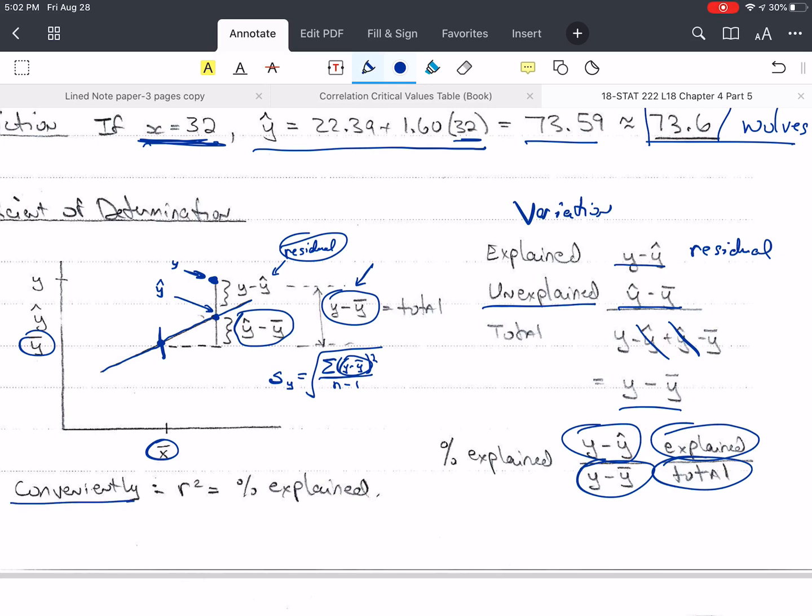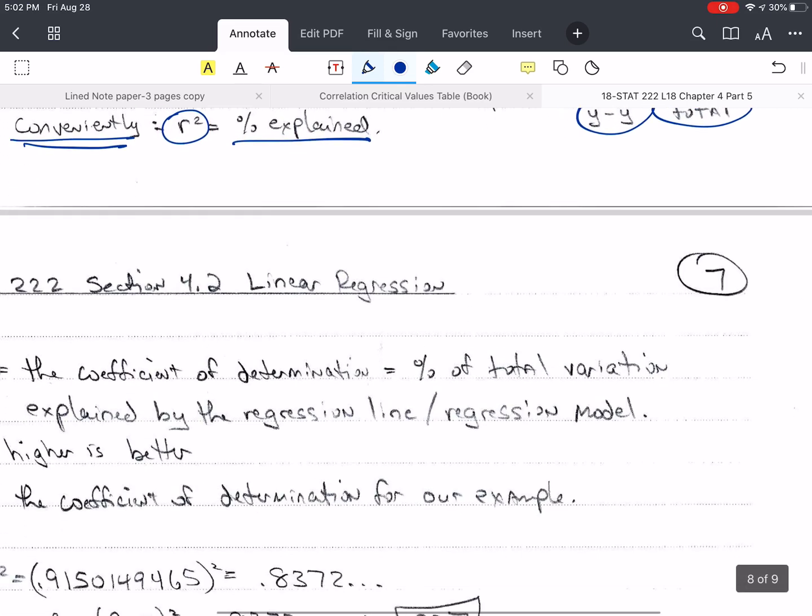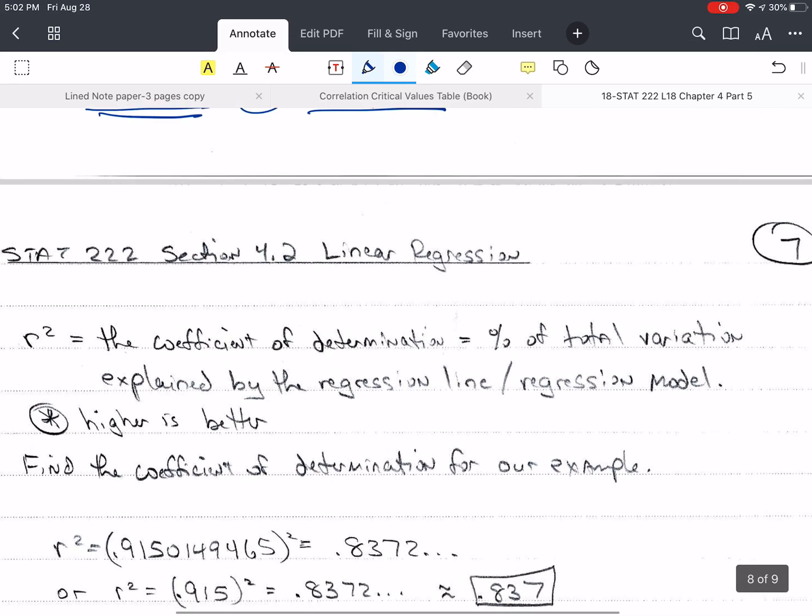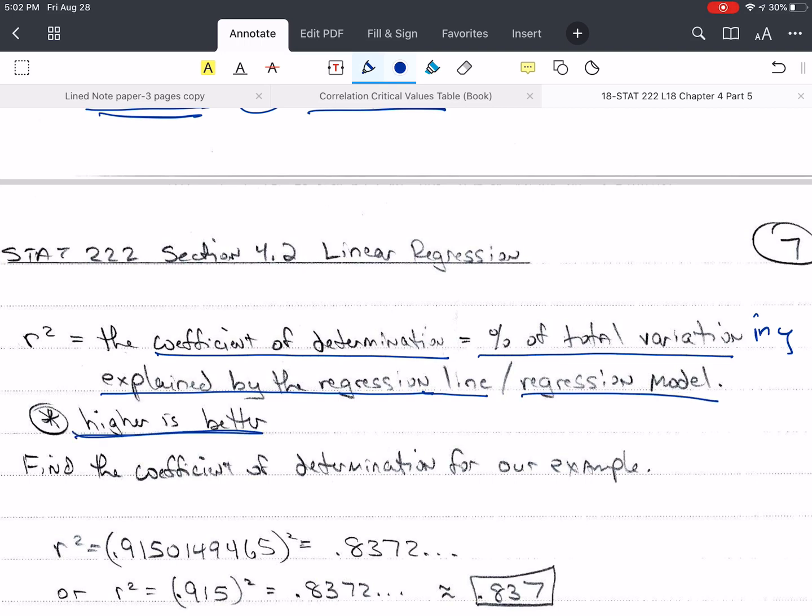So we want to know the percent explained. Explained is the residual, unexplained is y hat minus y bar. If I add these two together, I get the total variation. The y hats cancel out and I get y minus y bar for the total. Now, the percent explained is the explained divided by the total. Conveniently, it turns out this is the same as r squared. So that makes it real easy. Once we have r, we just square it. This is called the coefficient of determination. It's the percent of total variation in y that is explained by the regression line or regression model. Higher is better. The more that's explained, the better the fit is.